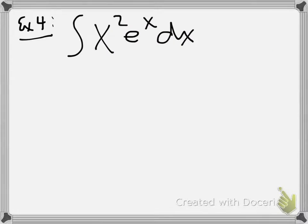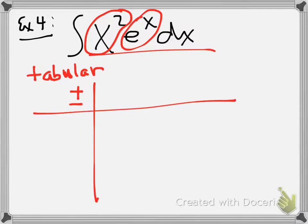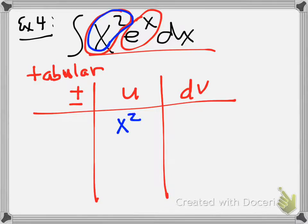One more type of problem: in example two we had to do two steps of integration by parts. There's a method called the tabular method — it doesn't work all the time, but it works when one part is a polynomial and the other is something like e^x that repeats itself. You set up three columns: the plus-minus column, the u column (derivatives), and the dv column (integrals). The signs alternate plus, minus, plus, minus. For x² e^x: u = x², dv = e^x dx. Taking derivatives: 2x, then 2, then 0 — stop at 0. Integrating e^x stays e^x each time.